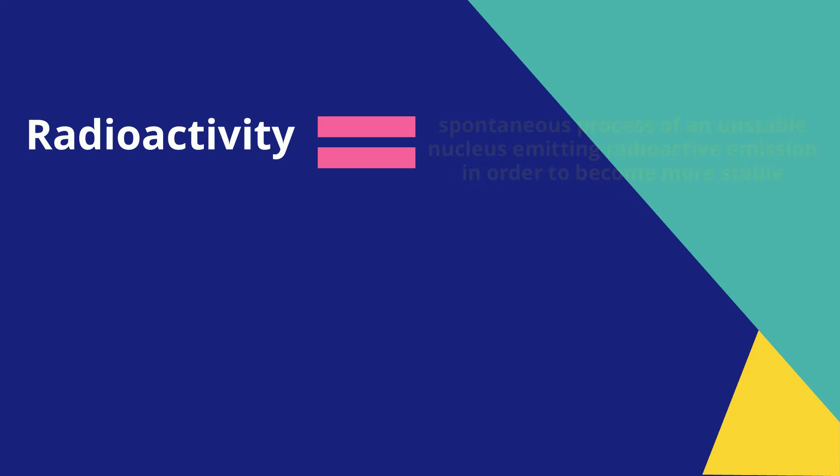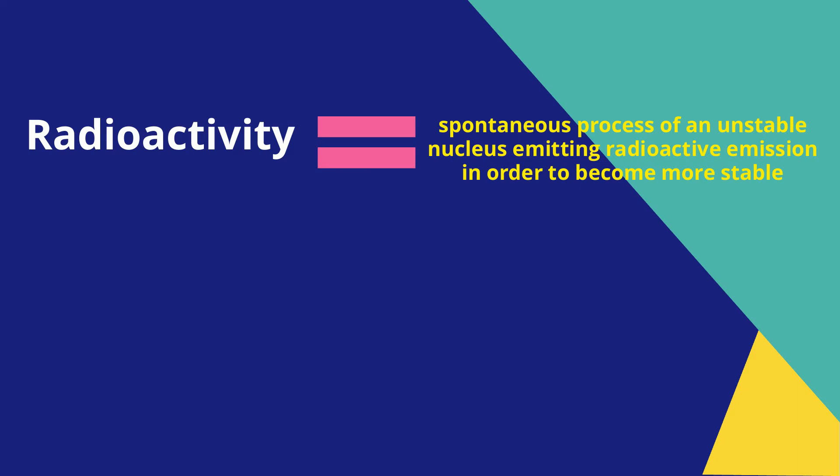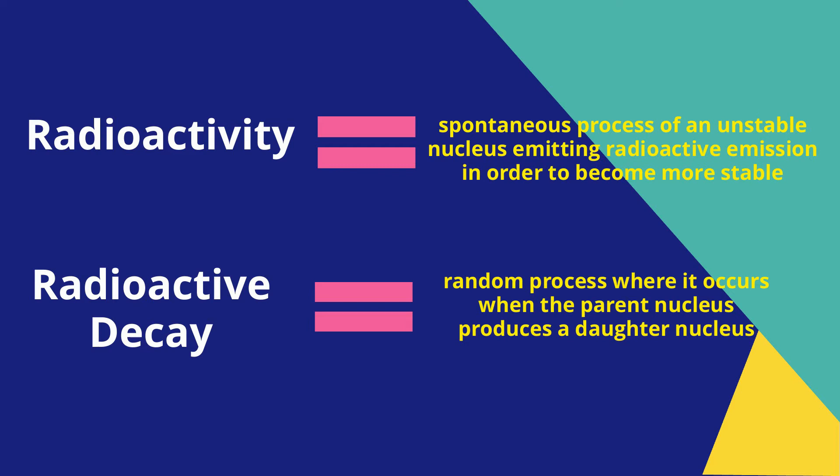Radioactivity is the spontaneous process of an unstable nucleus emitting radioactive emissions in order to become more stable. Decay is a random process that occurs when the parent nucleus produces a daughter nucleus.